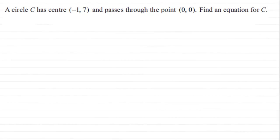Hi, now in this question we've got a circle C has center minus one seven and passes through the point zero zero and we've got to find an equation for C.